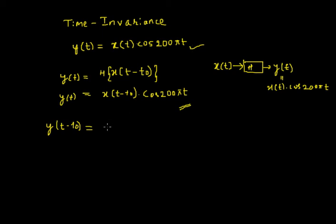Therefore I will get y(t-t₀) = x(t-t₀)cos(200π(t-t₀)). Here I find another t so I have to replace that with (t-t₀). This is what I get in the second half.